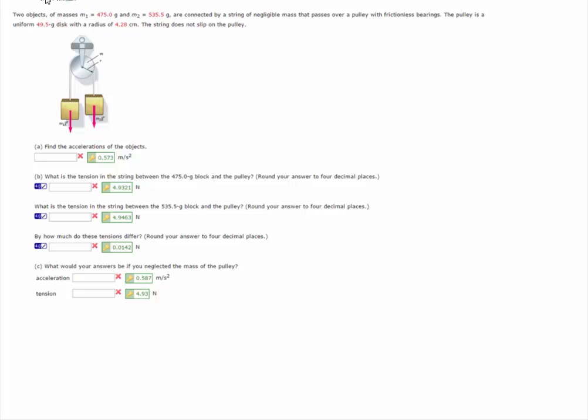This is Dr. Holt. In this problem, I have two objects. Mass M1 is 475 grams, and mass M2 is 535.5 grams. They're connected by a string of negligible mass that passes over a pulley with frictionless bearings. The pulley is uniform, has a mass of 49.5 grams and its radius is 4.2 centimeters. What we want to do is find the acceleration of the objects and then do the tensions and find out how much the tensions are going to differ.